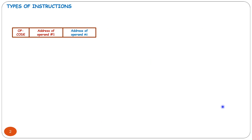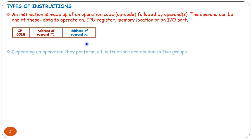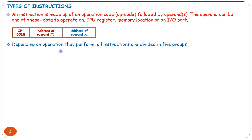As we know, the types of instruction: an instruction is made up of an operation code (opcode) followed by the operands. The operands can be one of the data to operate on — CPU register, memory location, or input/output ports. Every instruction consists of an operation code field, address of operand 1, and address of operand 2. Depending upon the operation they perform, all instructions are divided into five groups.